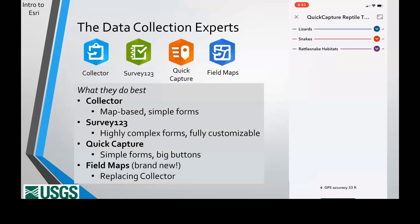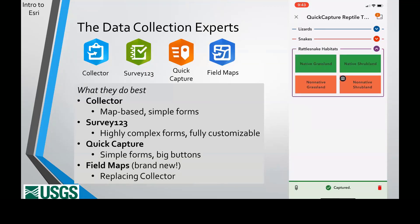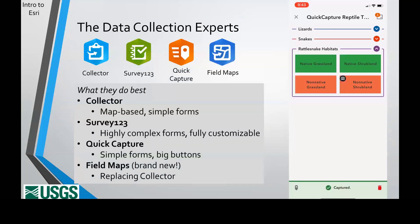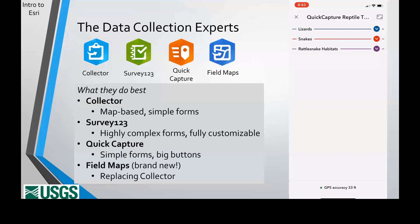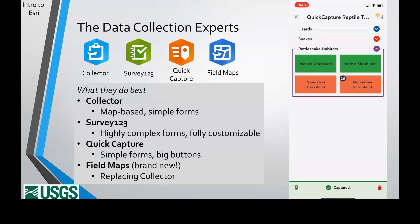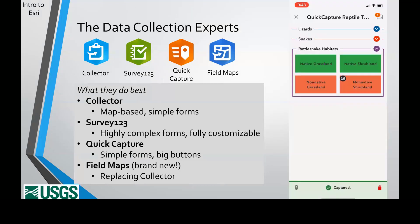Let's jump into the data collection apps. These four specialize in mobile data collection and work well online or offline. Collector is a map-centric data collection application, good for collecting simple data with a large spatial component. Survey123, as you saw from Michelle's talk, allows you to create highly customizable, intuitive, and interactive forms with little programming knowledge required — excellent for collecting highly complex data. QuickCapture is best for quick, simple data collection like incidental observations or point counts — just click the big button to record a location. Finally, Field Maps is Esri's latest data collection app and will be replacing Collector and several other applications.